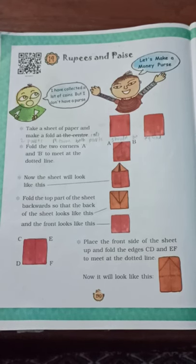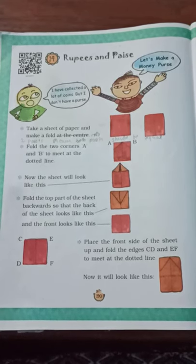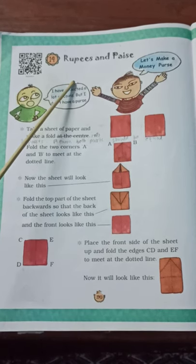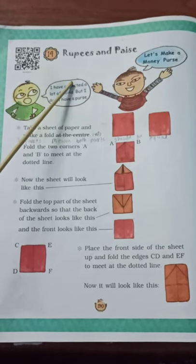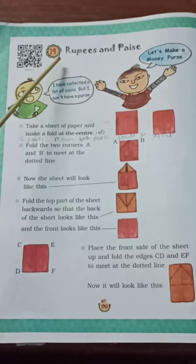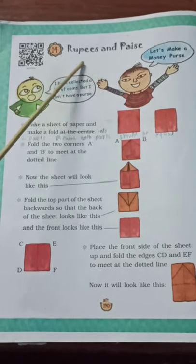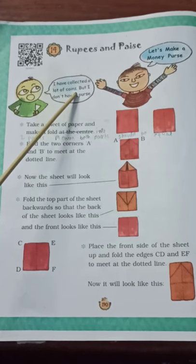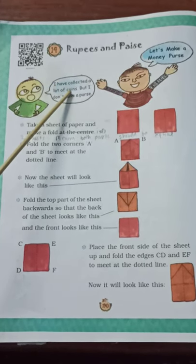Hello everyone, in this video we will study chapter number 14 of class 3rd mathematics, that is Rupees and Paise. The name of this chapter is Rupees and Paise, that means this chapter is completely about currency.